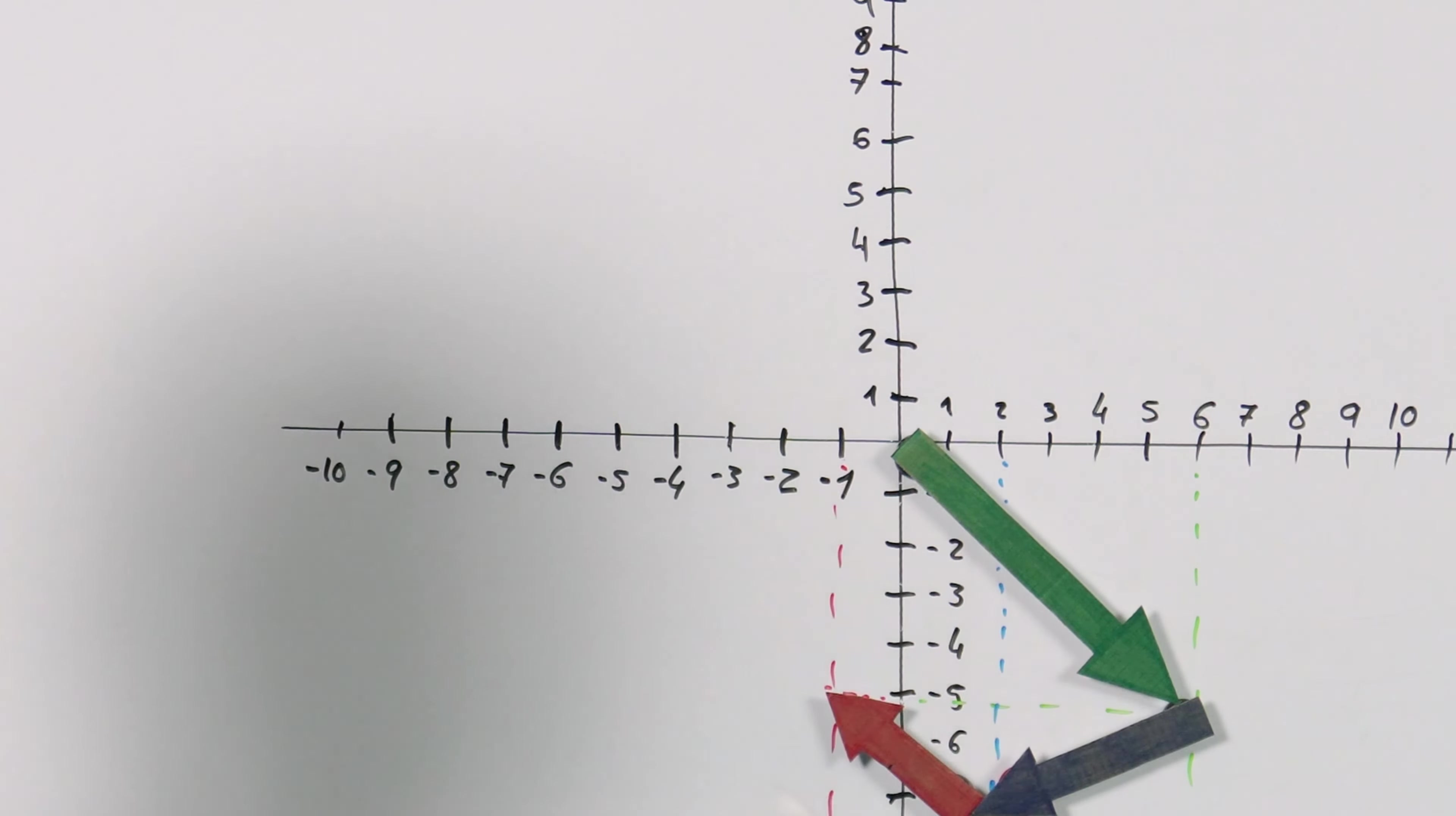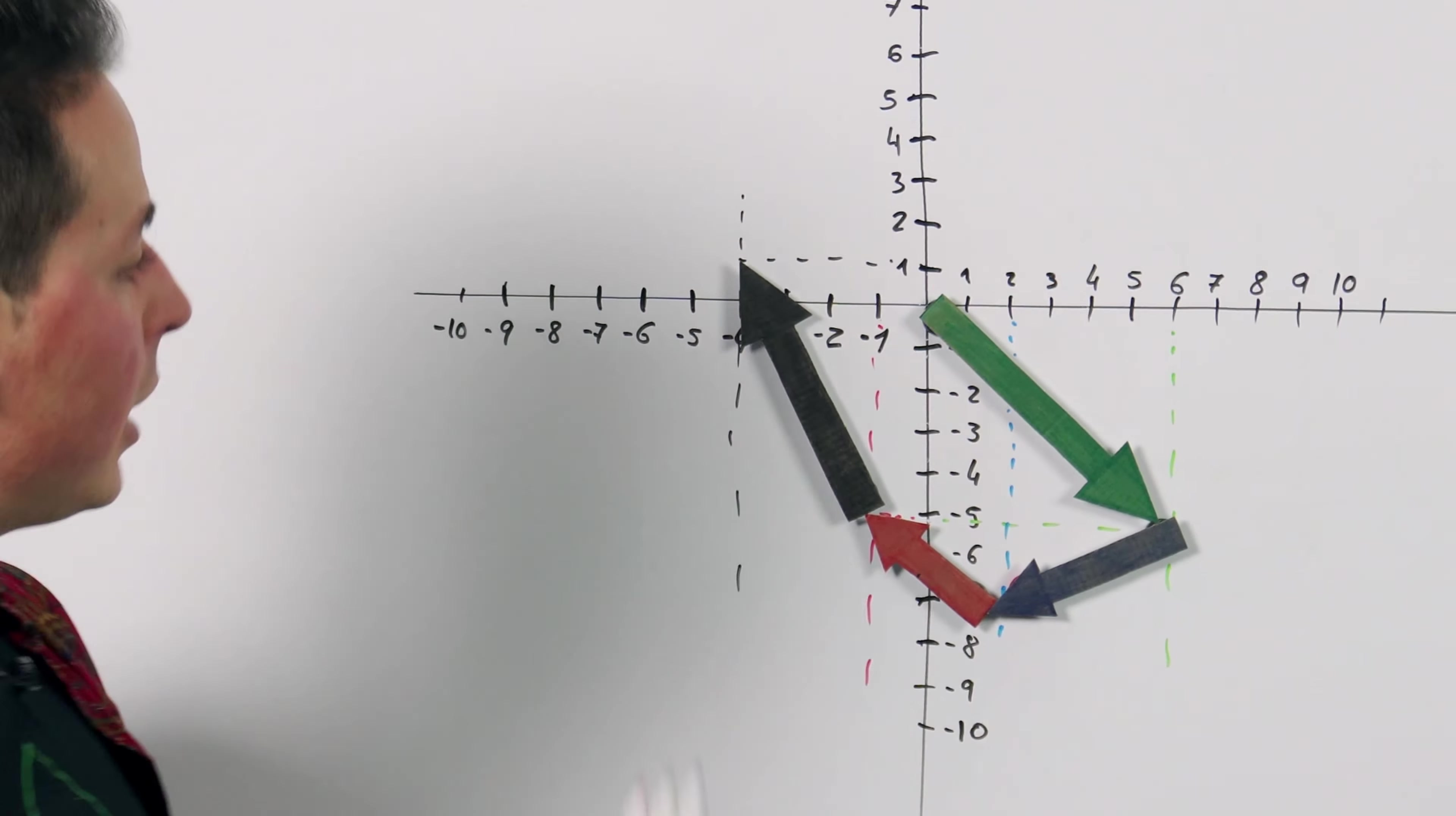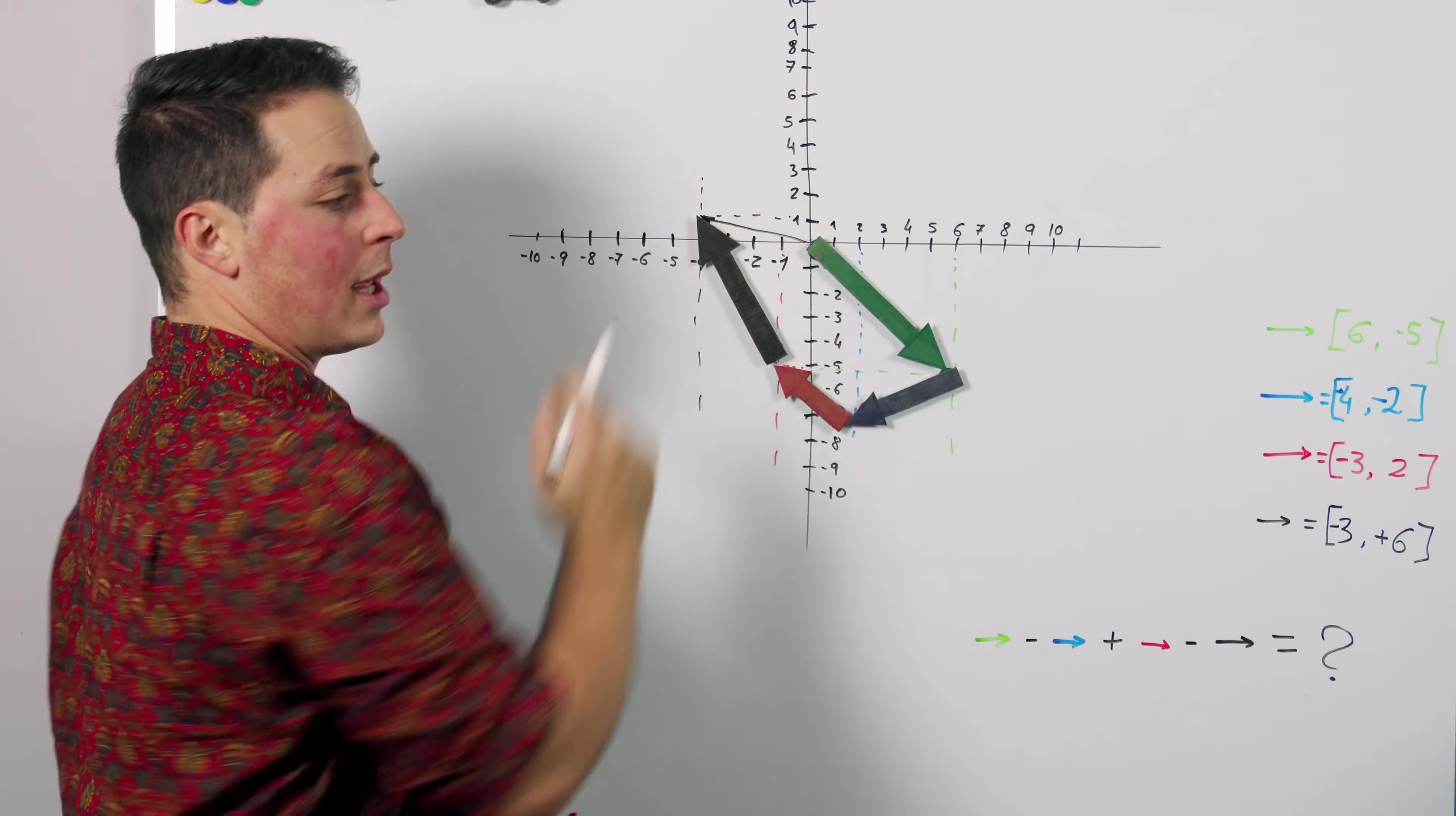So we have minus 1 minus 3 is minus 4 and we have minus 5 plus 6 which is 1. We put our black vector here and this is the result. Our final vector resulting from this operation is the vector minus 4 plus 1.